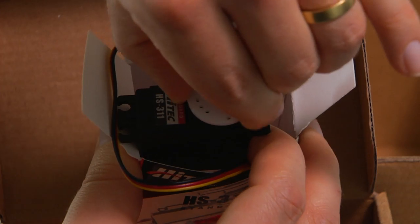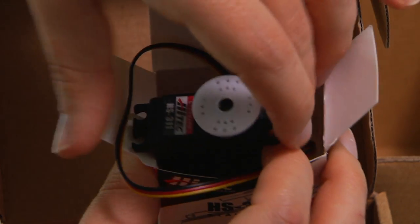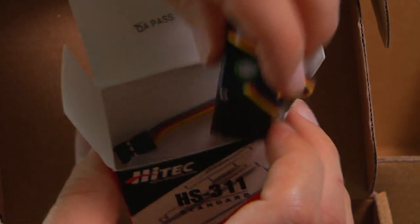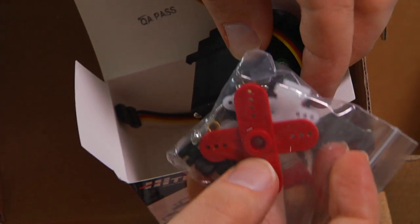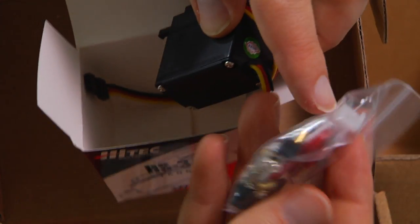This is the servo horn, this white plastic piece. And inside the box are actually several other horns. So this red plus sign or the smaller white plus sign.